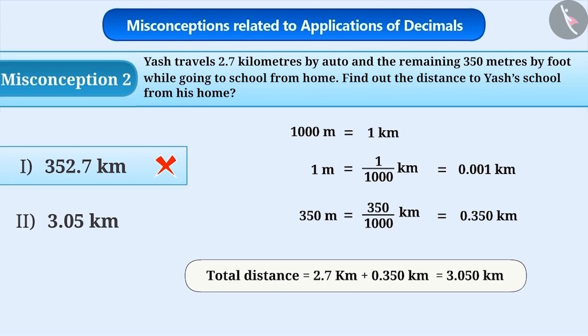We can write this as 3.05 kilometers by removing the zero from the right side of the decimal number. The correct answer is option 2.